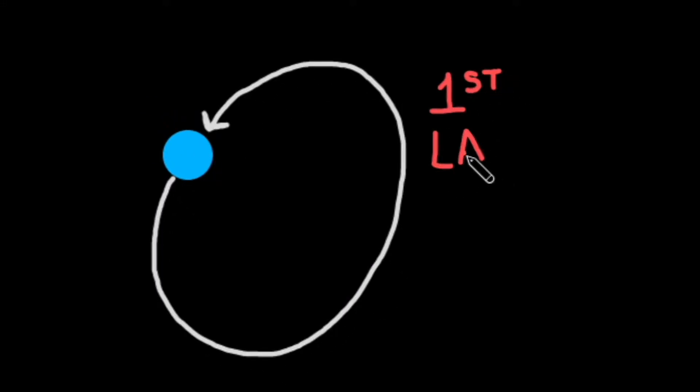Hello, and welcome back to Astronaut. In this video, we're going to be talking about the first of Kepler's laws: planets have elliptical orbits.